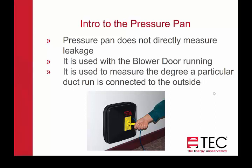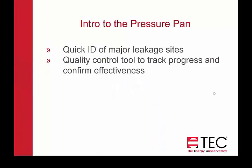When we're using the pressure pan to diagnose duct leakage, it's used with the blower door running. It's used to measure the degree a particular duct run is connected to the outside. With the house at 50 pascals, you're going around from register to register measuring the degree to which that particular duct run is connected to the outside when you're taking that test. It gives you a quick identification of where the major leakage sites are — the higher the number, the more leaky it is to the outside.